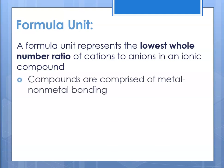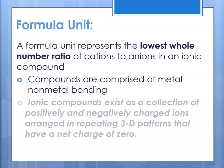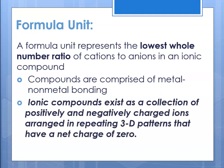These compounds are comprised of metal-nonmetal bonding. The definition states that ionic compounds exist as a collection of positively and negatively charged ions arranged in a three-dimensional pattern and that have a net charge of zero. Different substances have different 3D patterns.